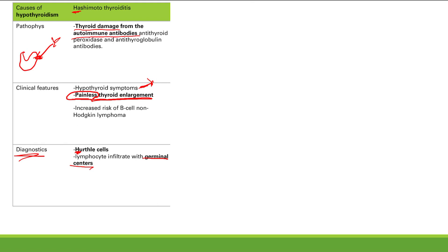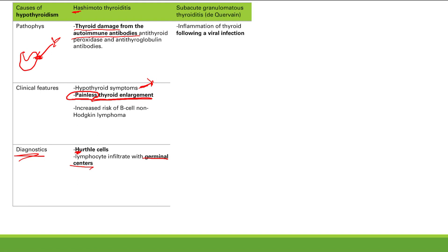Another cause of hypothyroidism is subacute granulomatous thyroiditis, also called De Quervain's thyroiditis. This is an inflammation of the thyroid following a viral infection. The viral infection leads to thyroid inflammation, thyroid damage, and decreased thyroid hormone.